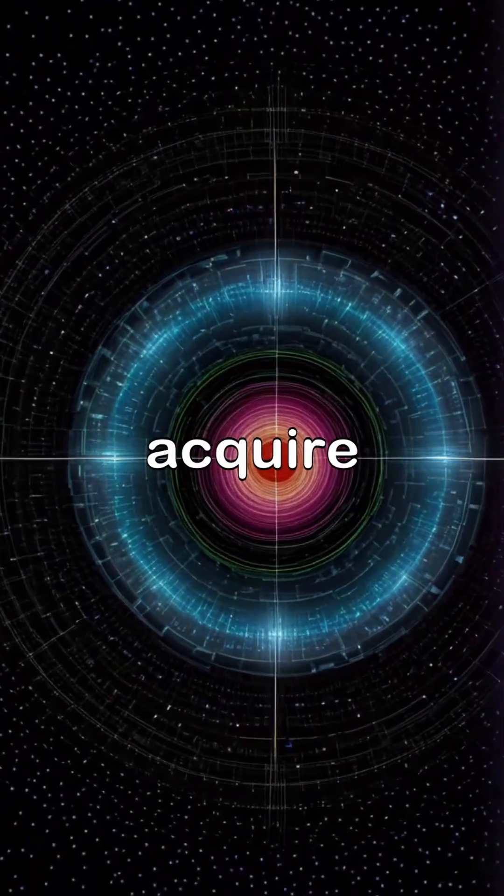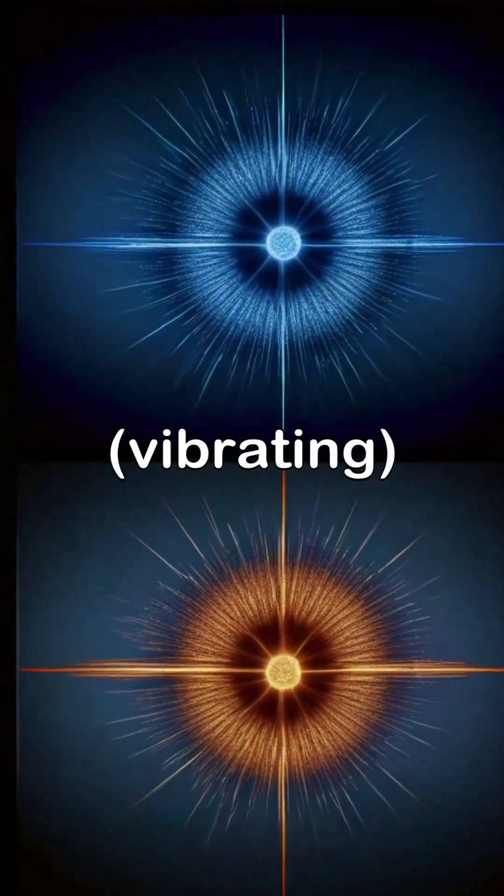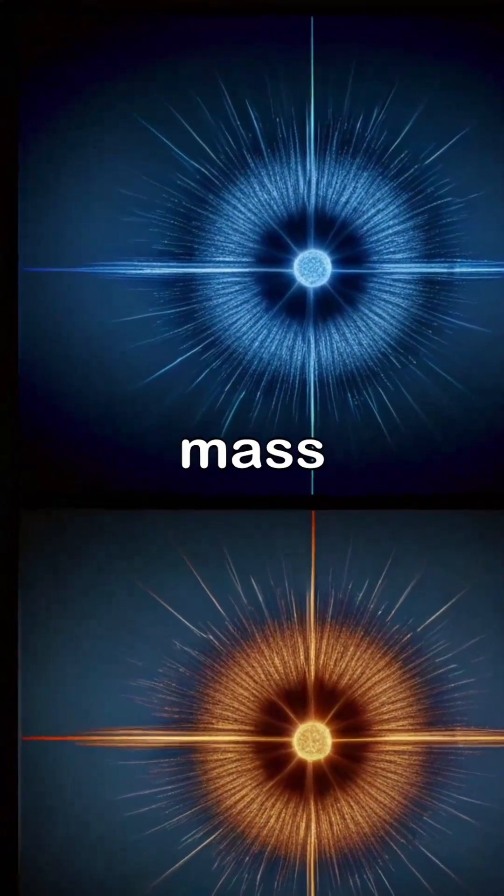Mass generation: particles acquire mass, resistance to changes in motion, by interacting and vibrating with the Higgs field. More interaction means more mass.